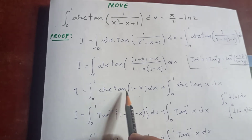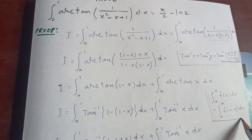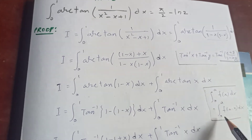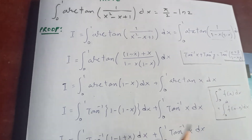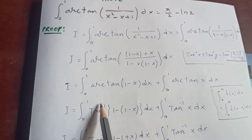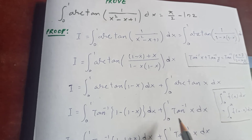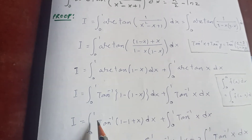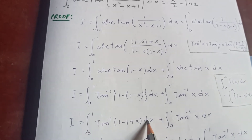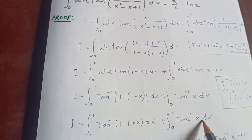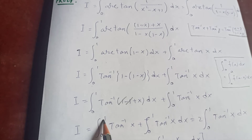Now let's simplify. We know the property that the integral from 0 to a of f(x) dx equals the integral from 0 to a of f(a minus x) dx. Applying this to the first integral: arctan(1 minus x) becomes arctan(1 minus (1 minus x)) = arctan(x). So I equals the integral from 0 to 1 of arctan(x) dx plus the integral from 0 to 1 of arctan(x) dx, which is 2 times the integral from 0 to 1 of arctan(x) dx.